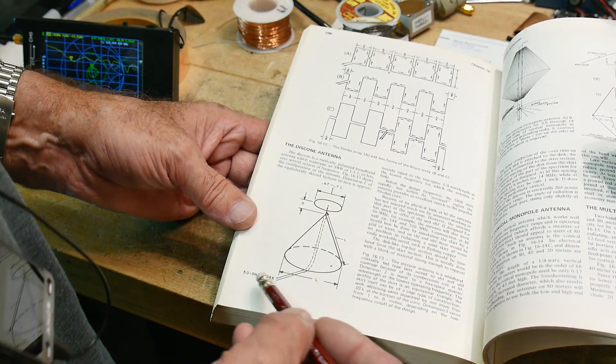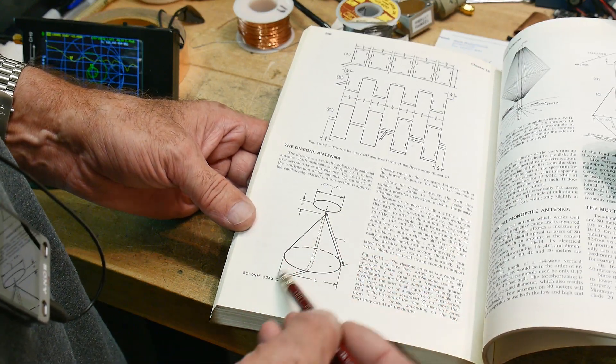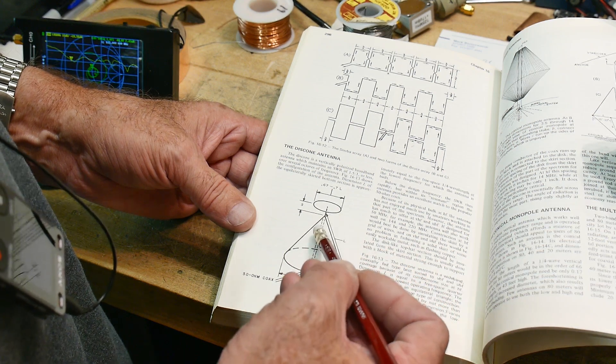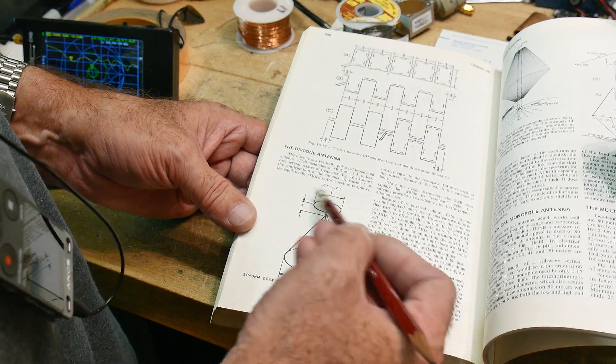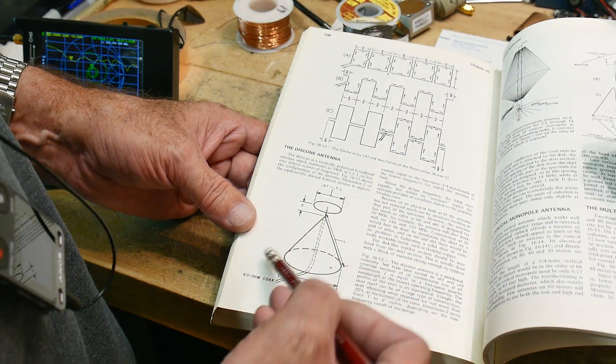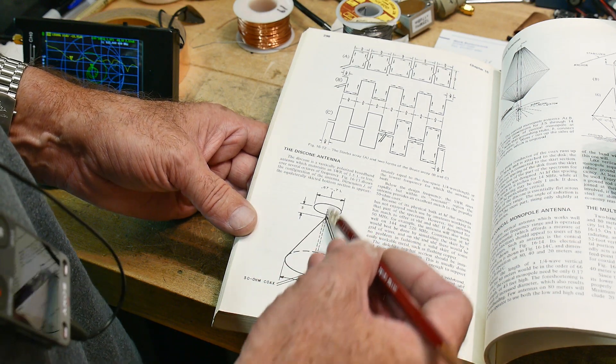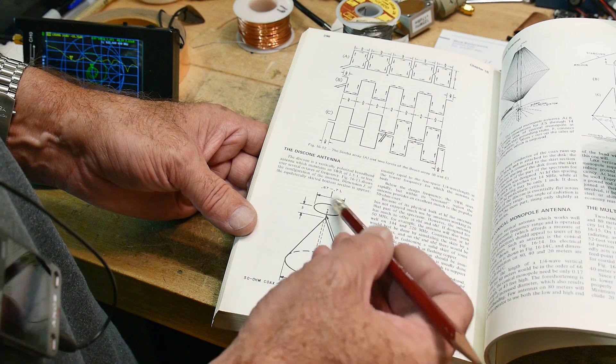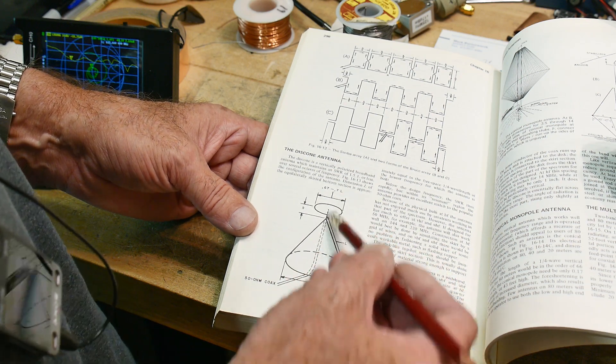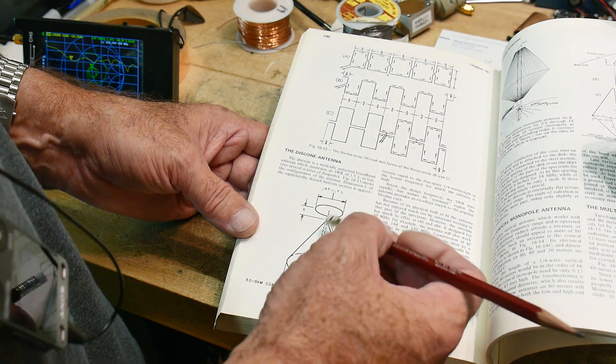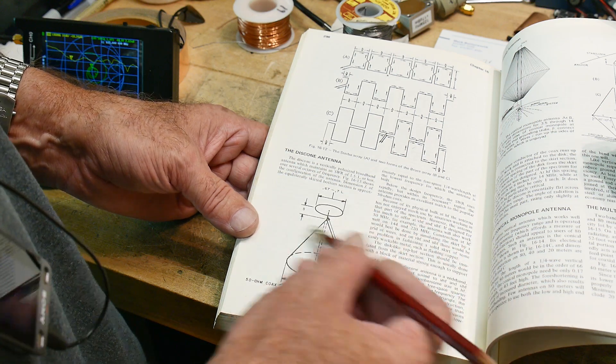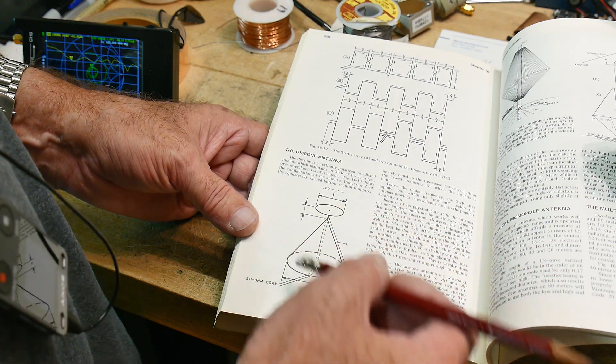So the theory is that you feed this thing with 50 ohms, and the center conductor goes to a hat, and then the outer conductor goes to this cone. And then there is some distance between the hat and the cone where your wavelength of interest will fit. And so this thing will work with short wavelengths and work with long wavelengths as long as it fits the dimensions of this thing.